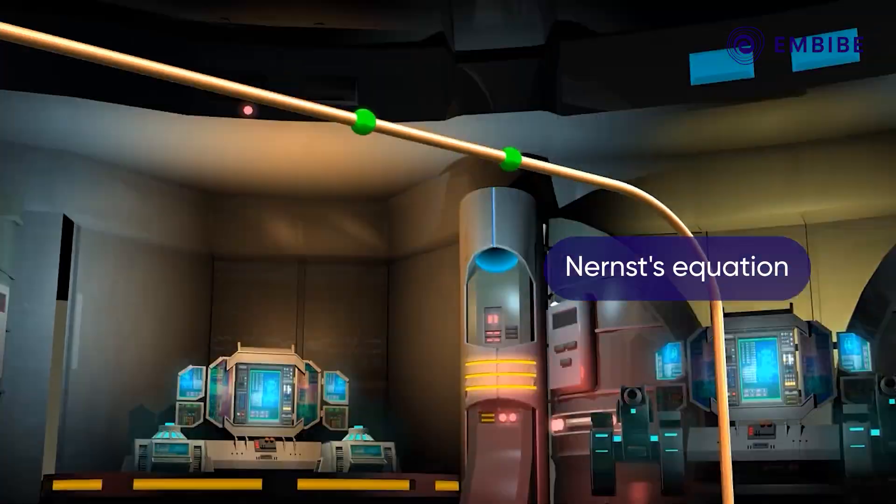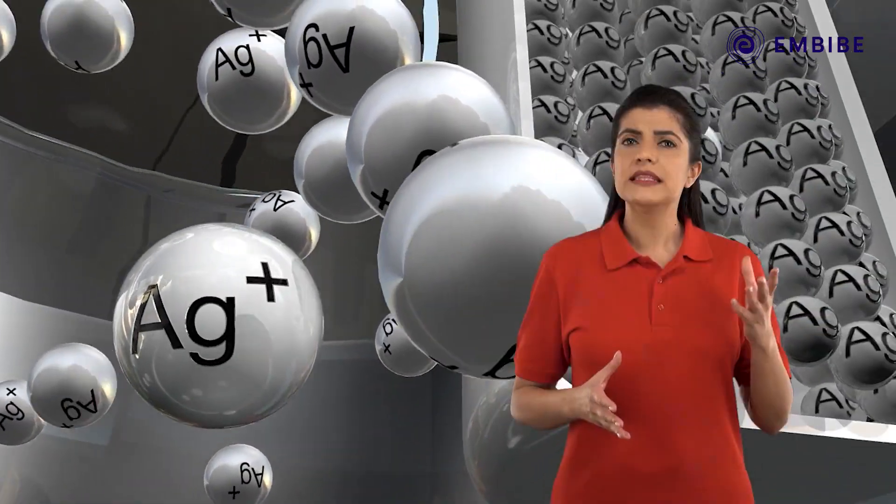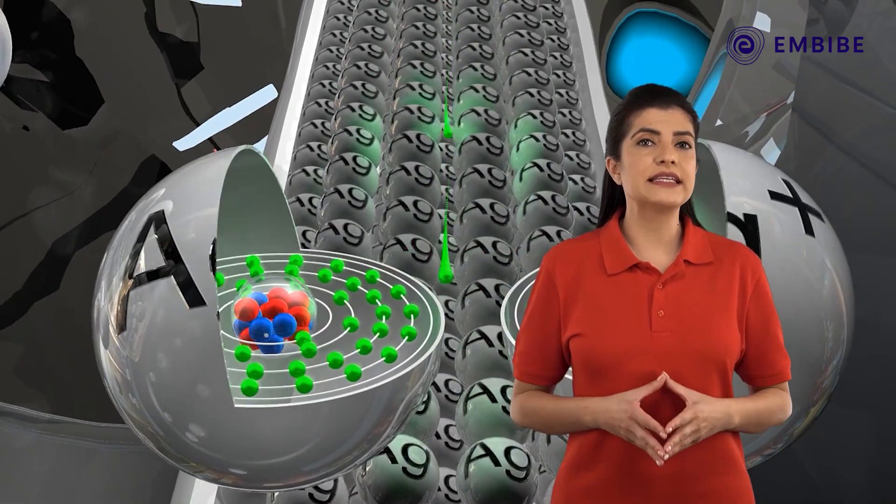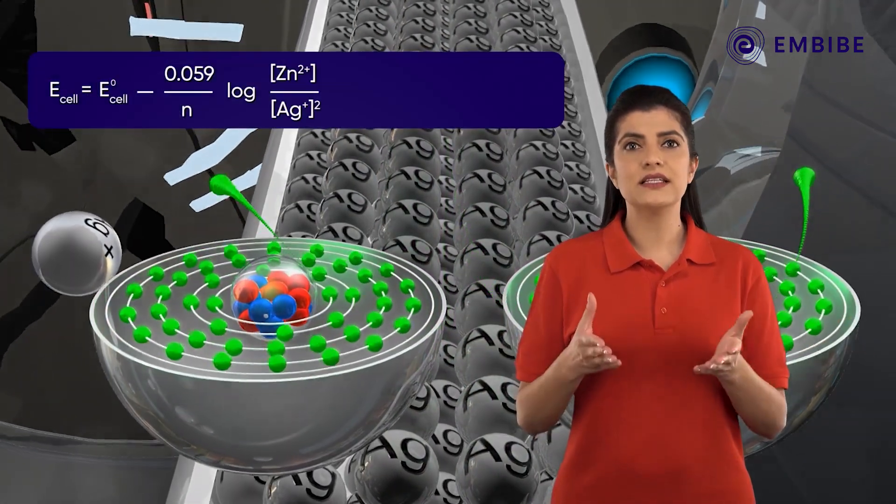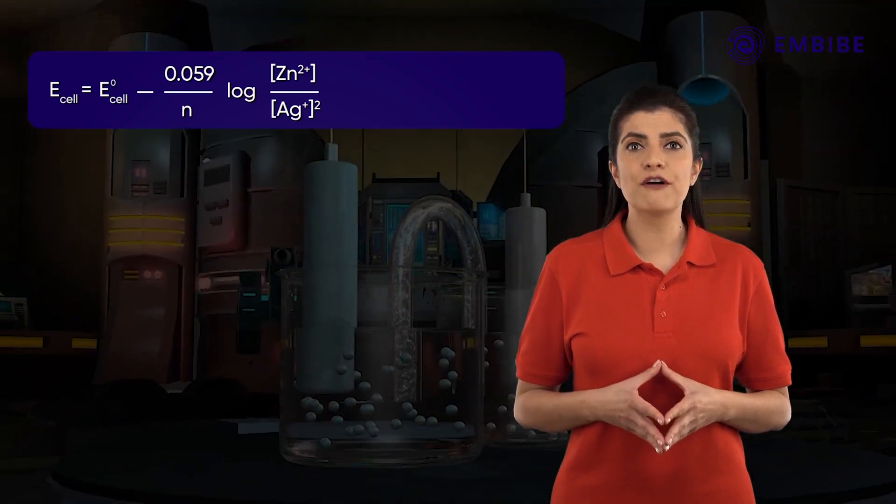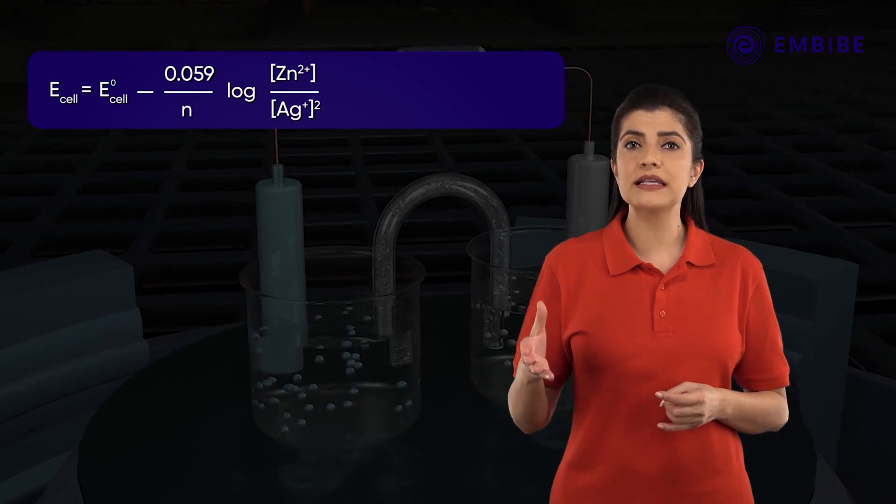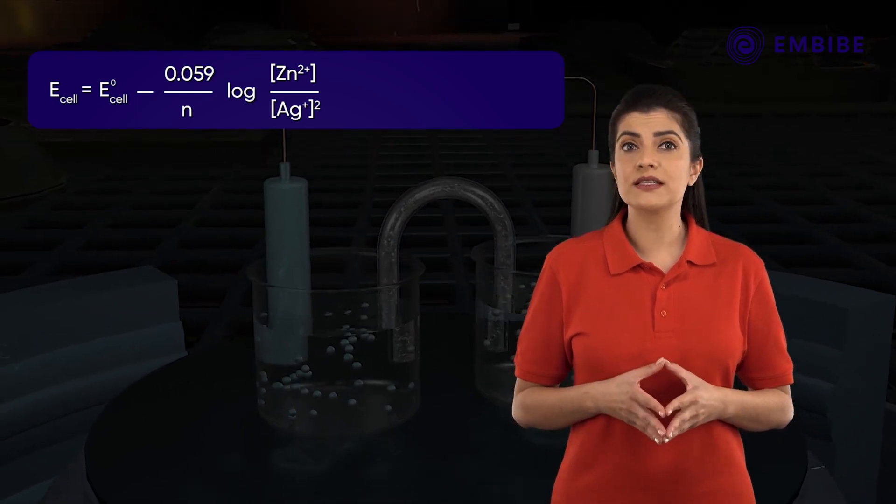The Nernst equation for this cell is given as: E cell equals E⁰ cell minus 0.059 divided by n multiplied by log [Zn²⁺] divided by [Ag⁺]².